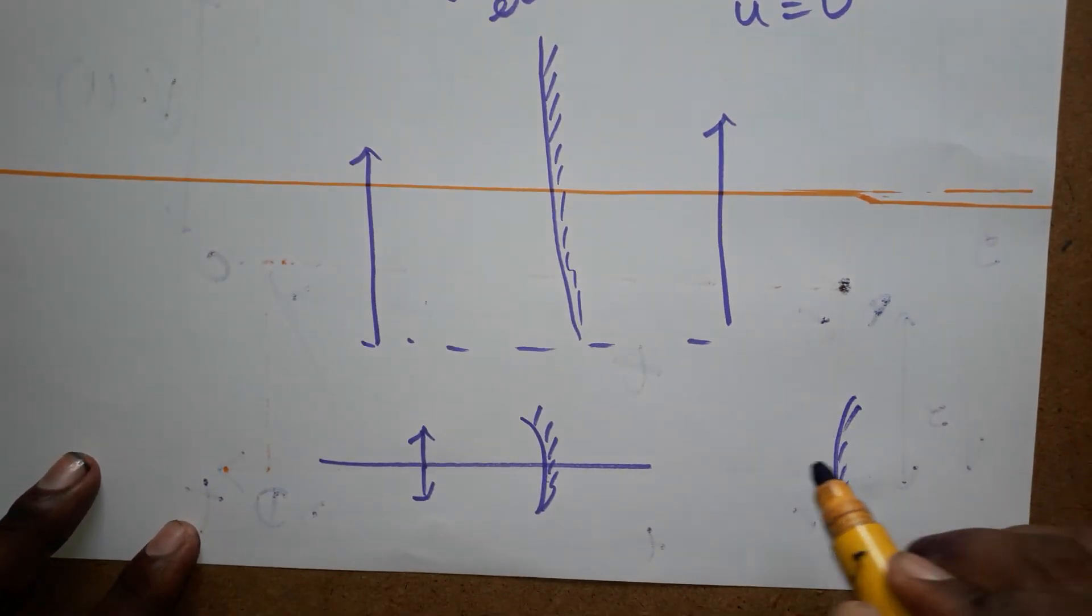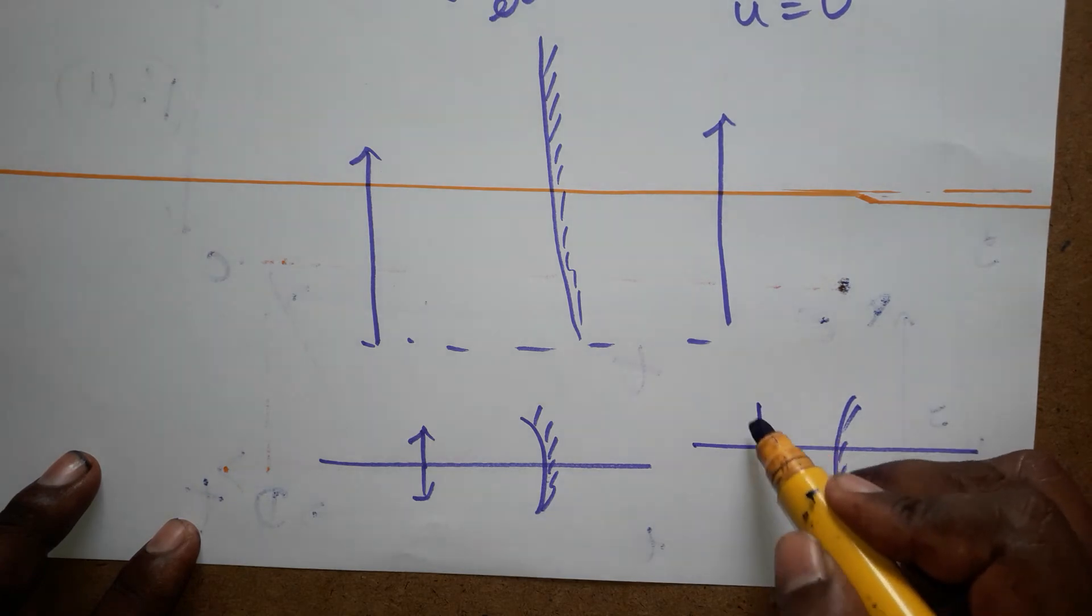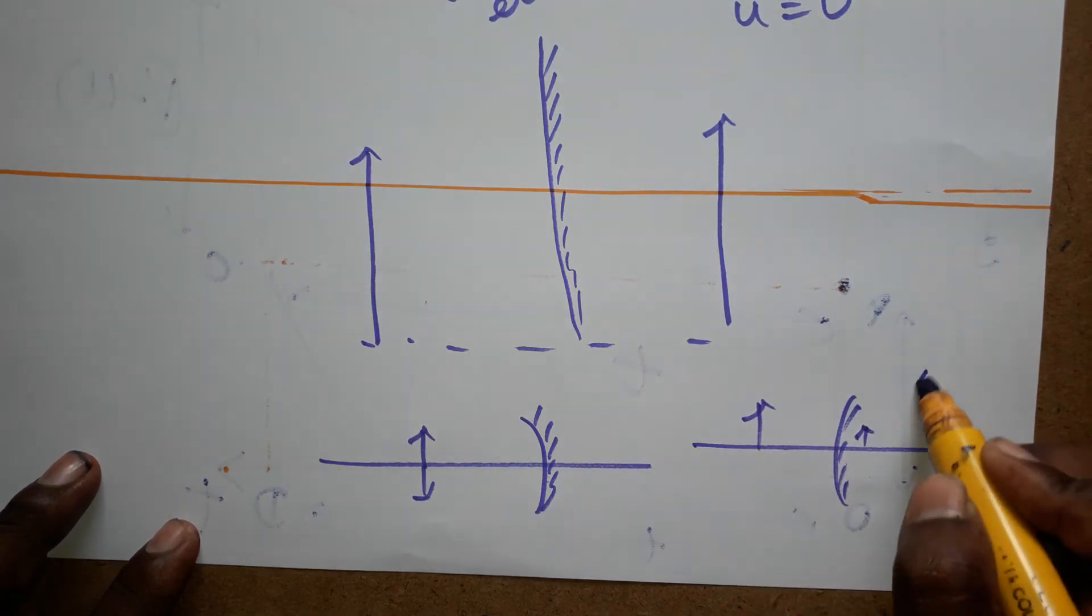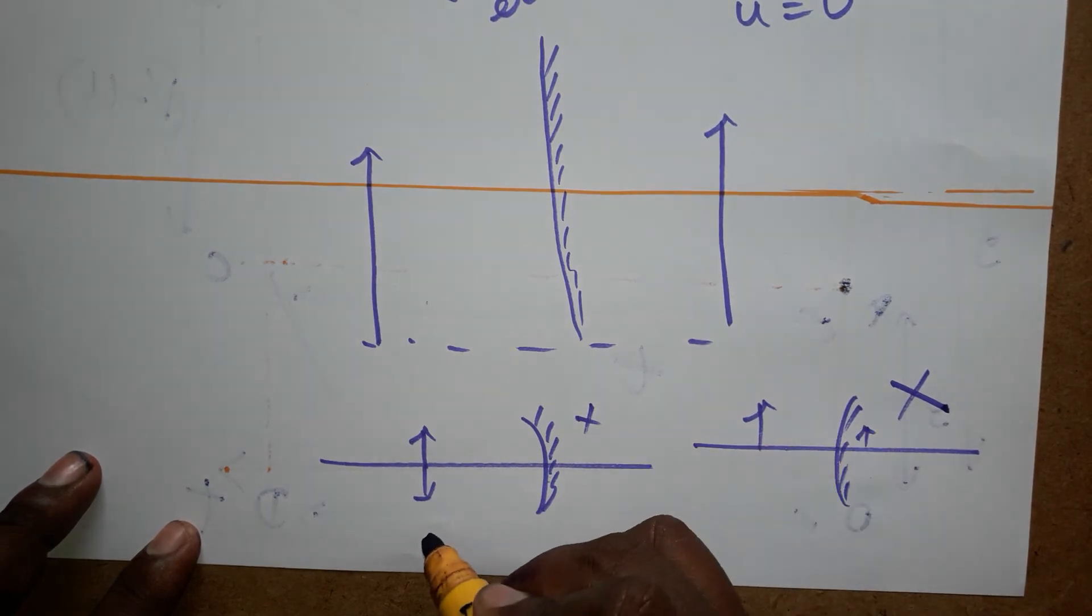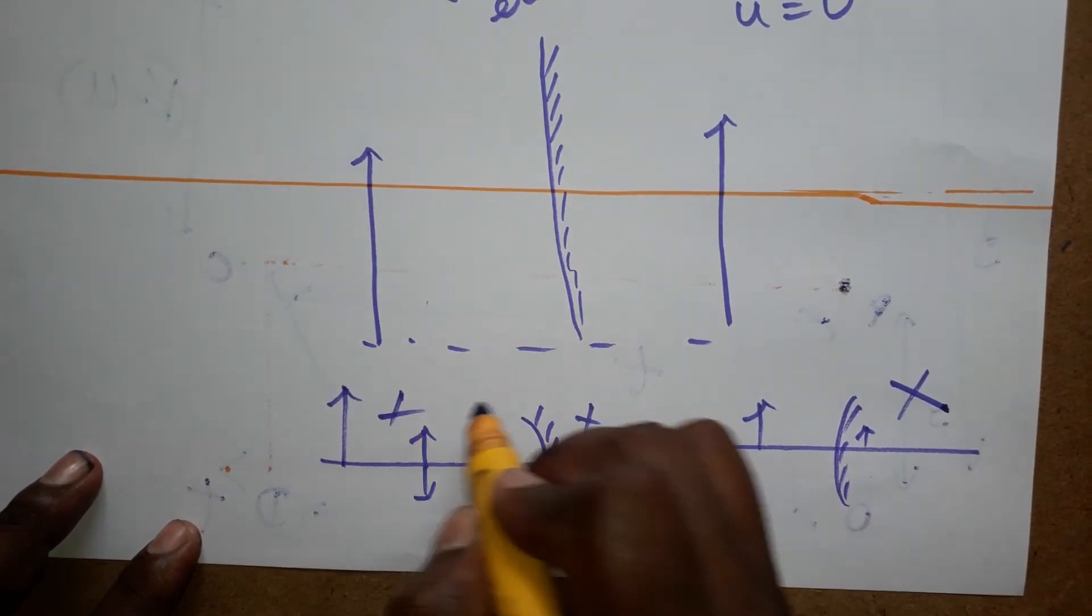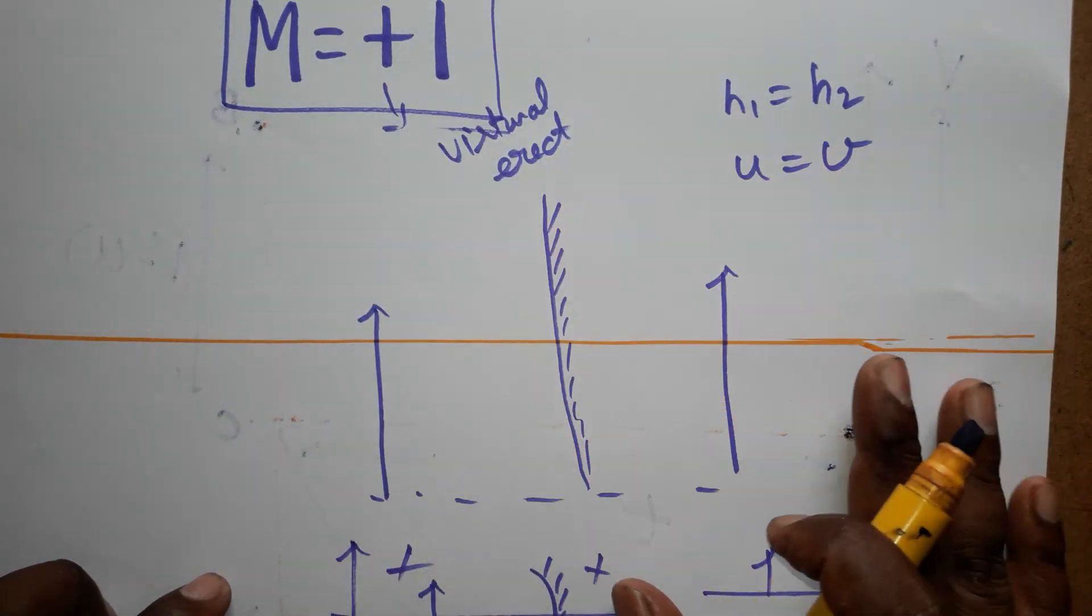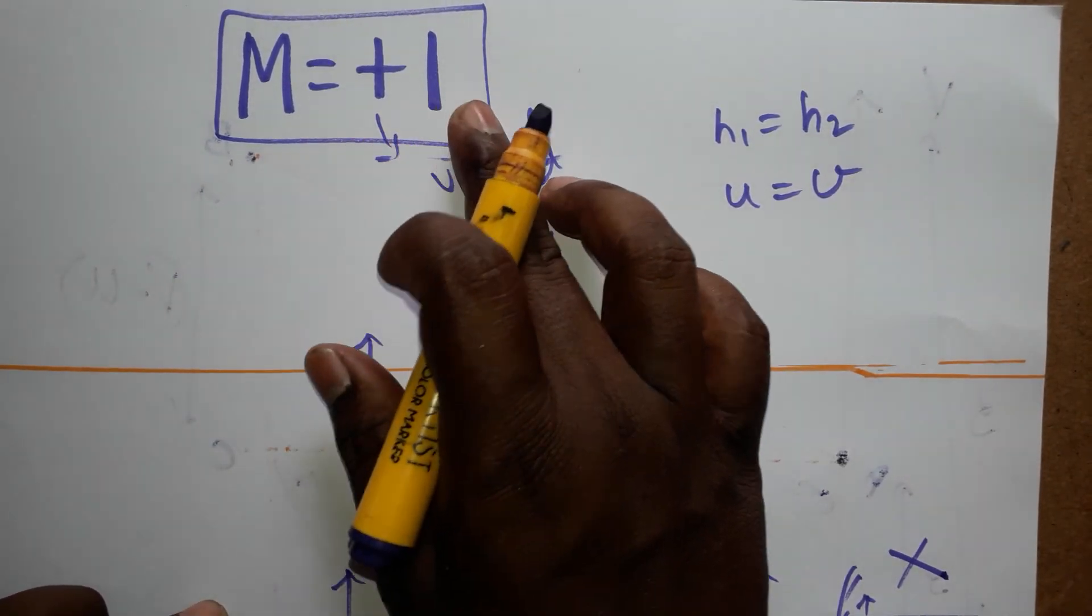Convex lens always will produce the diminished image. So that means convex is not possible. Concave will produce real inverted, otherwise it's virtual magnified. Both the cases are not going to be possible. Only using a plane mirror we can get M is equal to plus one.